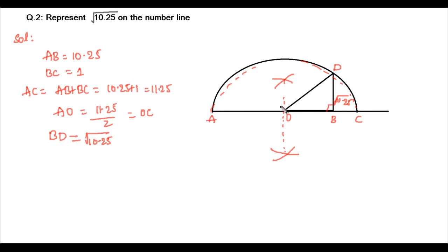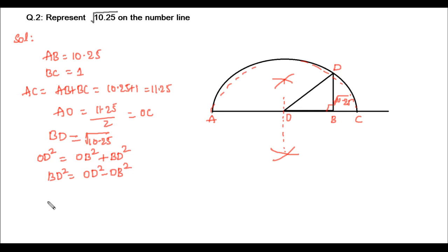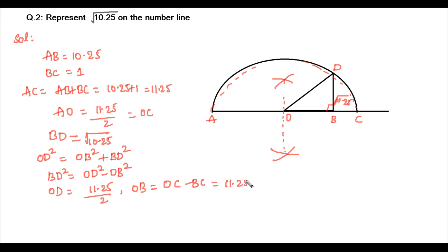To prove this, we join O with D. Triangle OBD is a right-angle triangle with the right angle at B. By Pythagoras theorem: OD squared equals OB squared plus BD squared, so BD squared equals OD squared minus OB squared. OD is the radius of the semicircle, which equals 11.25 by 2. OB equals OC minus BC, which is 11.25 by 2 minus 1, giving 9.25 upon 2.